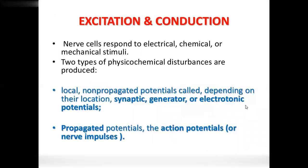Excitation and conduction: nerve cells respond to electrical, chemical, and mechanical stimuli. Two types of physical or chemical disturbances are produced. The first type is local, non-propagated potentials — called synaptic, generator, or electrotonic potentials. The second type is propagated potentials, which are action potentials.